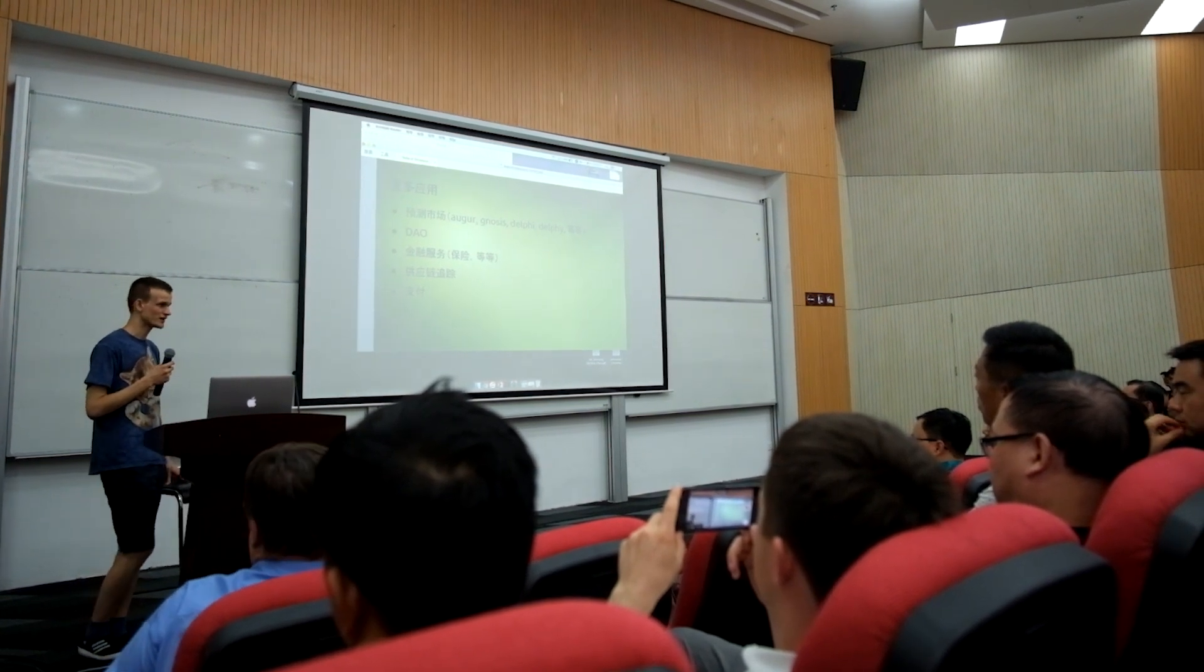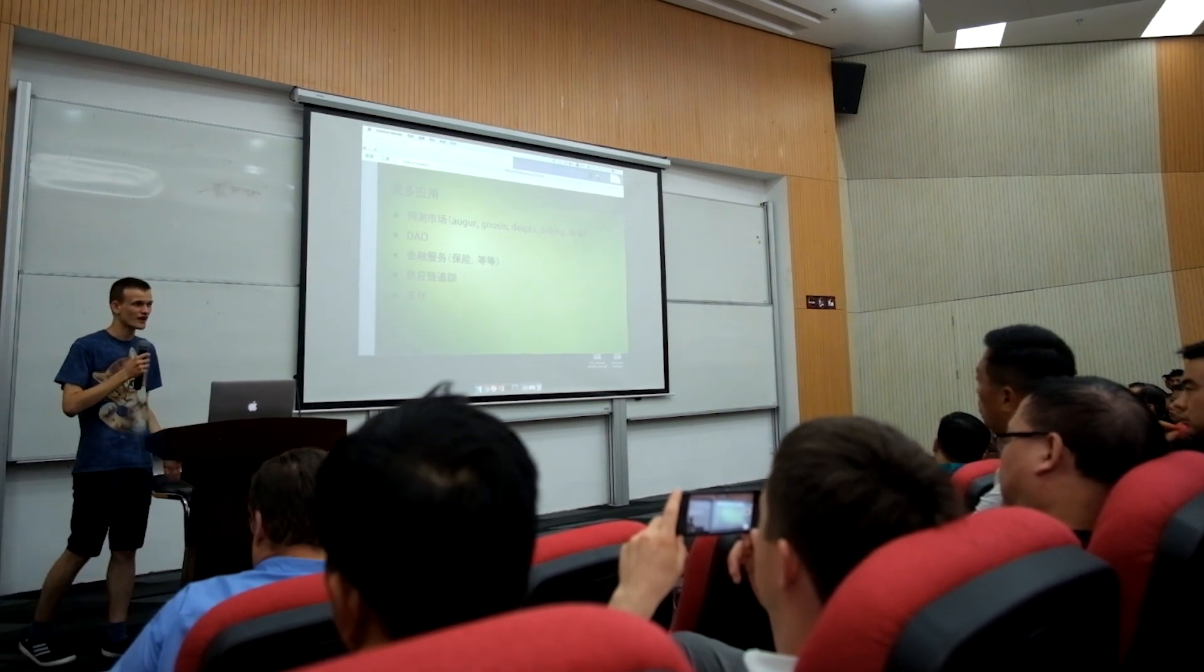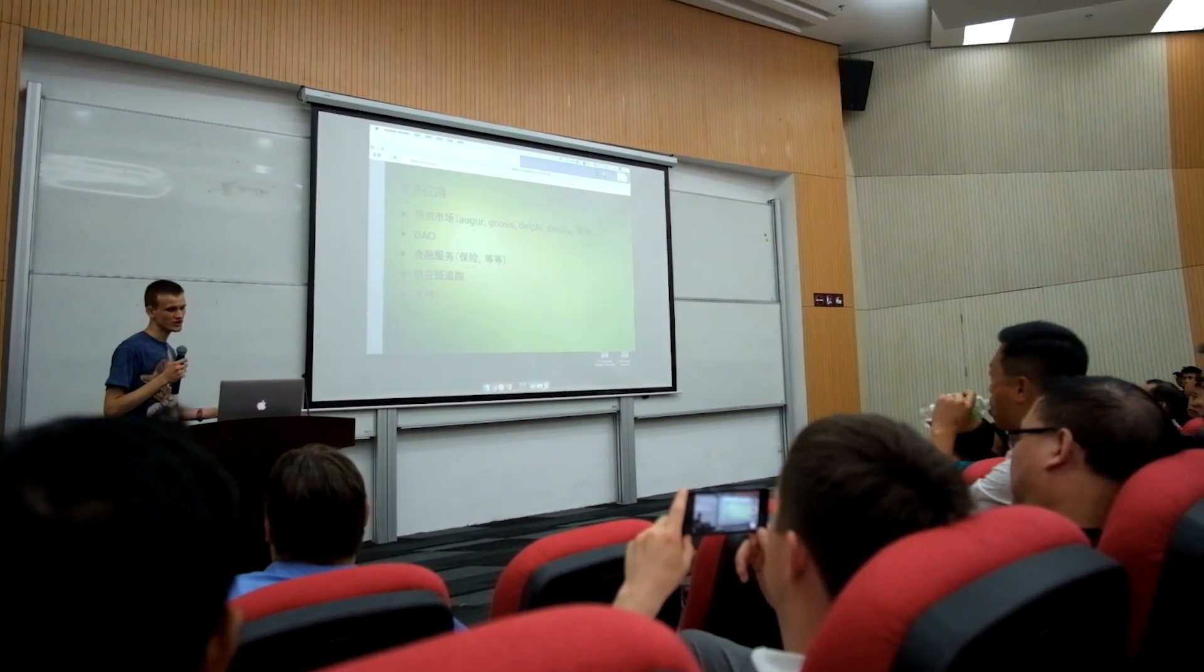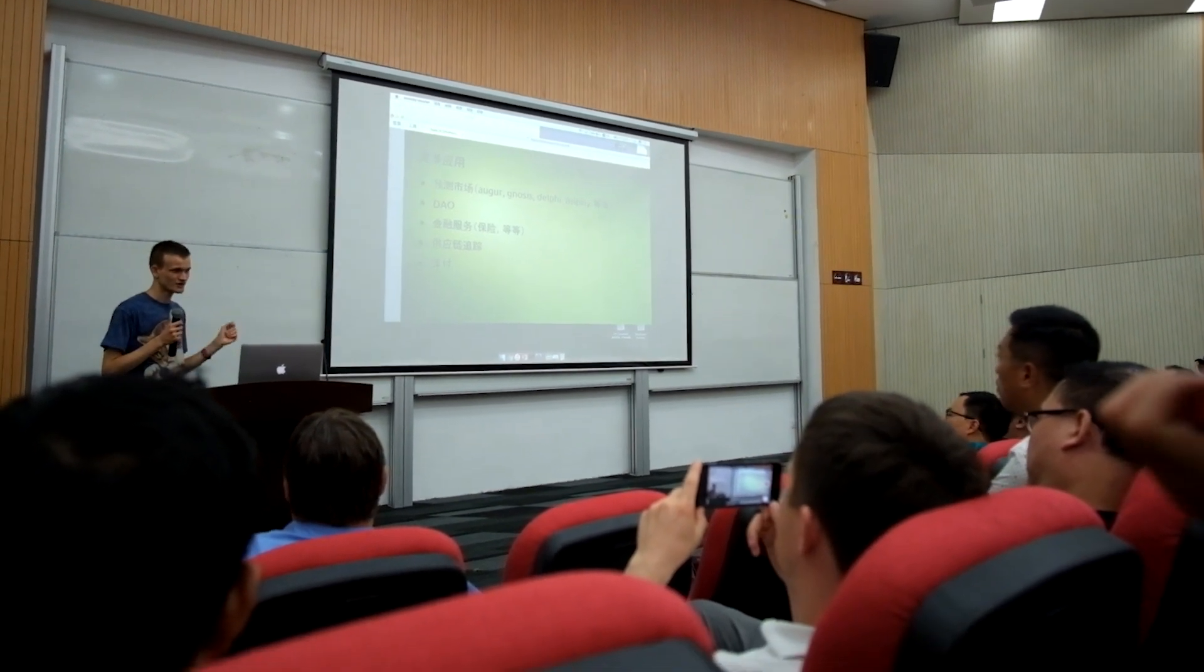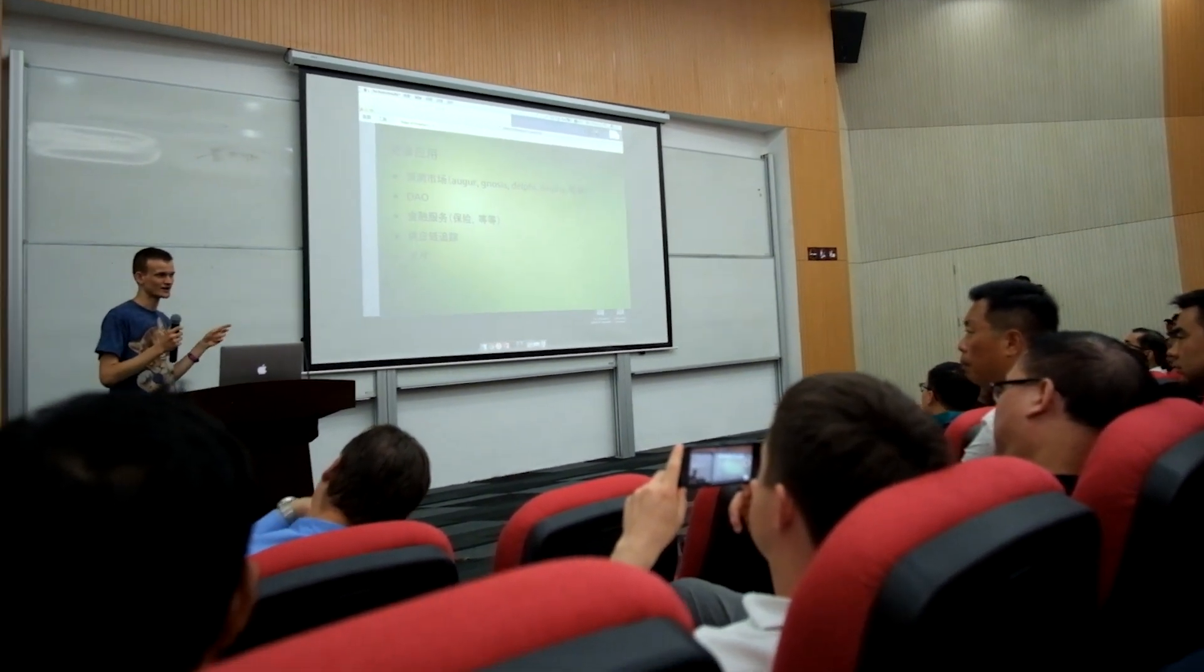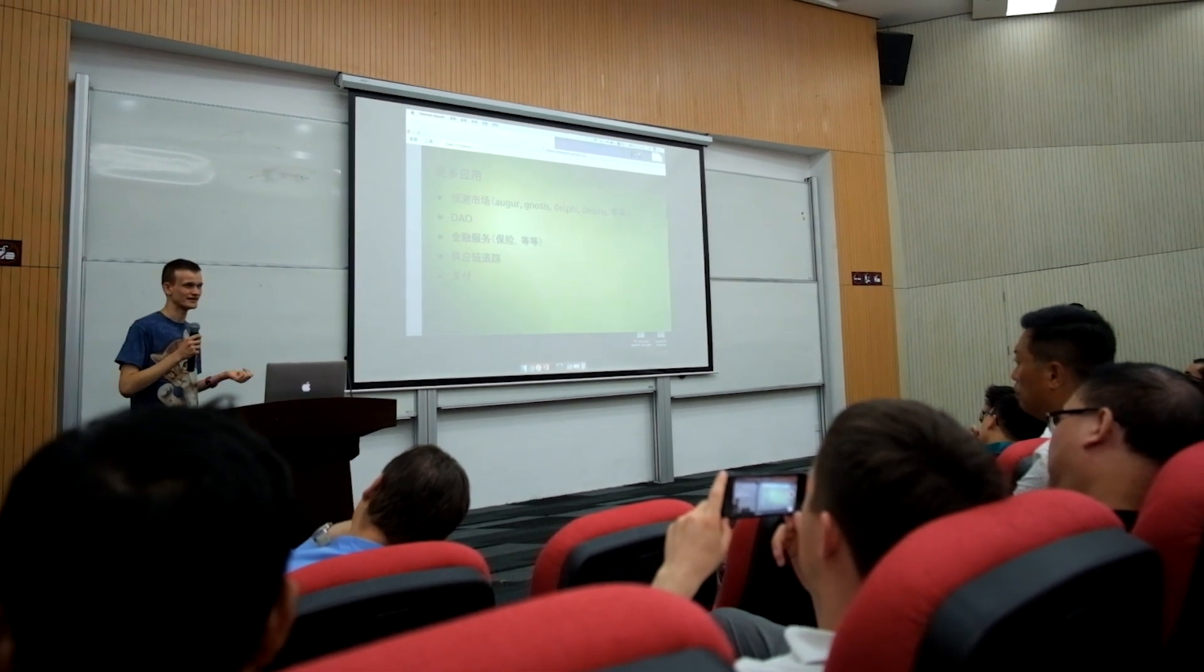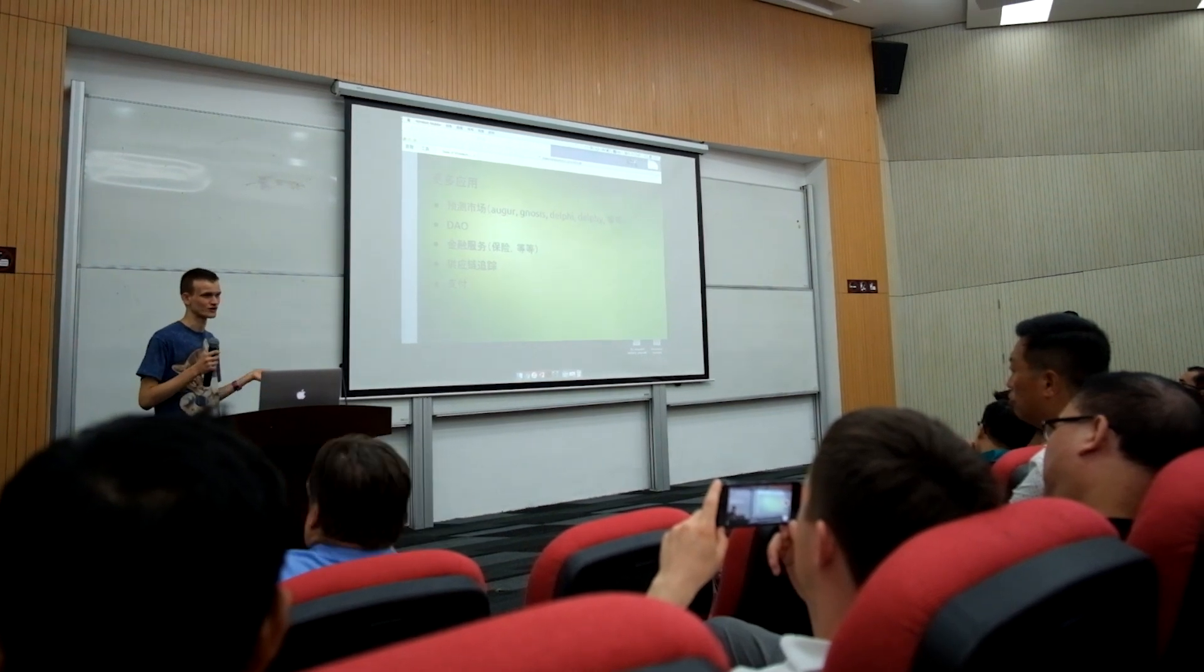People are interested in using this for various applications. There are DAOs that are looking to do investments, DAOs looking to do charities. Financial applications, insurance projects, supply chain tracking using records saved on a blockchain to keep track of products being created, products being shipped, payments. People using blockchains and Ethereum to do very many different kinds of things.